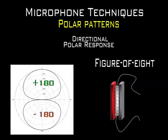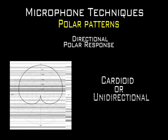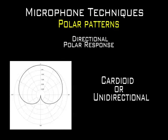The cardioid pattern is designed to fully pick up sound that originates from the front, to reduce by at least 6 dB sound that arrives from the sides, and to reject sound that arrives at the rear of the microphone. Because this pattern reduces sound from the rear by 15 to 25 dB, it is mostly used for applications that need leakage and noise control.